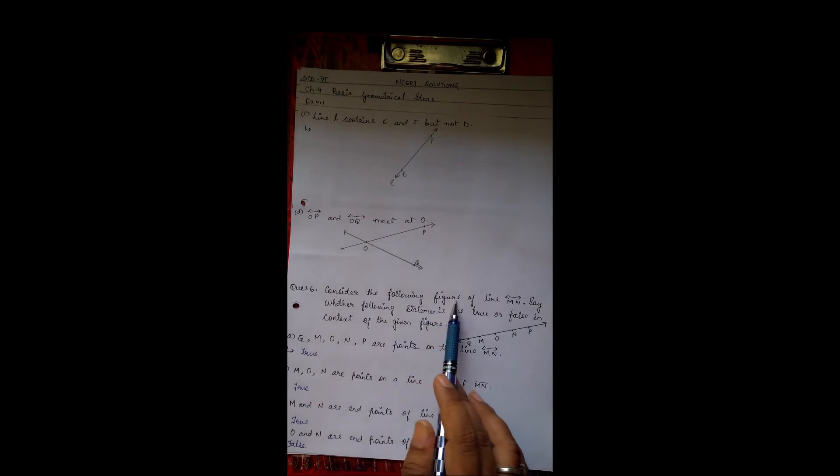Sixth question: consider the following figure of line MN. Say whether the following statements are true or false in the context of given figure. This is the figure given. Five points are there: Q, M, O, N, P. Okay.